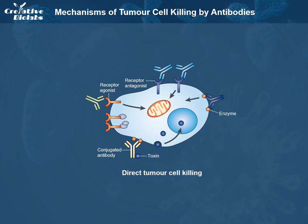An antibody binding to an enzyme can lead to neutralization, signaling abrogation, and cell death. A conjugated antibody can be used to deliver a payload, such as a drug, toxin, small interfering RNA, or radioisotope, to a tumor cell.